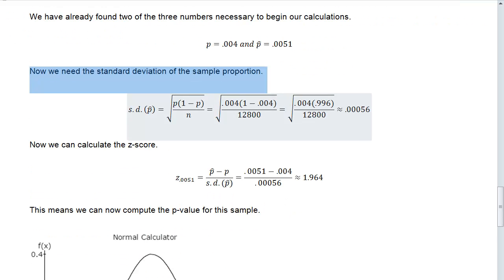The standard deviation of a sample proportion is equal to the square root of P times 1 minus P over N. I'm going to take the square root of 0.004 times 1 minus 0.004 and divide it by 12,800. Once I do the actual calculation, I get a value of 0.00056, rounded to two significant digits.